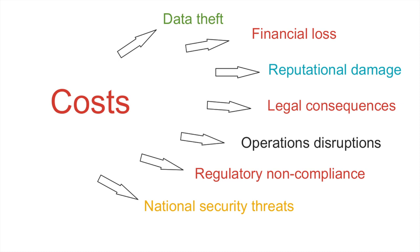Number seven is national security threats. Sometimes there is a cyber attack on critical infrastructure — for example, power grids, transportation, communication, and many others. This can cause extensive disruption and damages. Every time when there is that cyber attack on critical national infrastructure, it is bound to affect your business because our businesses heavily rely on national infrastructure.